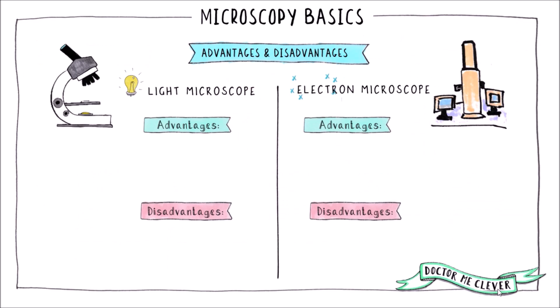So electron microscopes although they are amazing do have some drawbacks and you need to be aware of the advantages and disadvantages of both a light and electron microscope. So light microscopes can be used to study living cells or organisms however electron microscopes can only view dead specimens due to the high pressure and vacuum needed to view the sample.